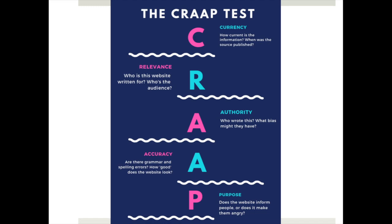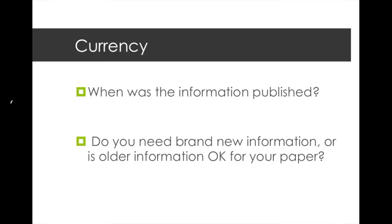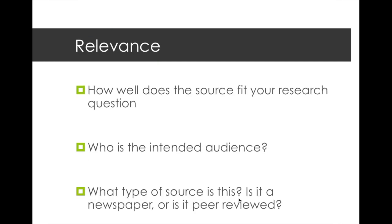So, let's break that down a little bit more. The C in CRAP stands for currency. That's when we look for when the information was published. Things can change pretty quickly. Let's say you're writing a paper on the immigration debate — that means you're probably going to want to find something that's been published in the last two years.